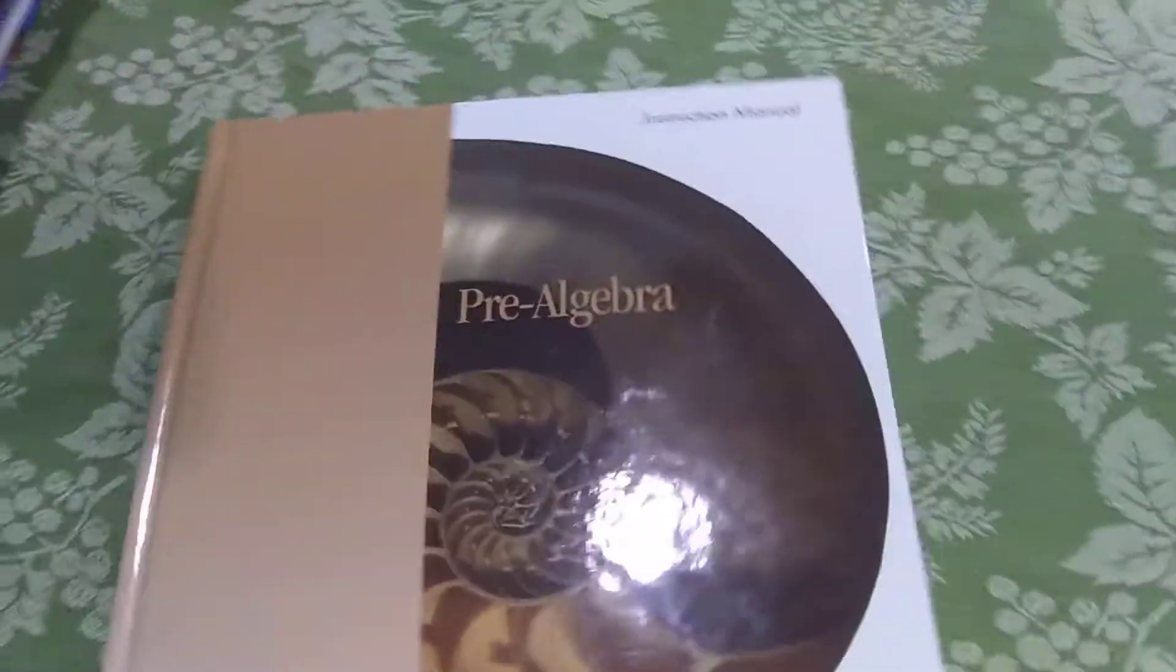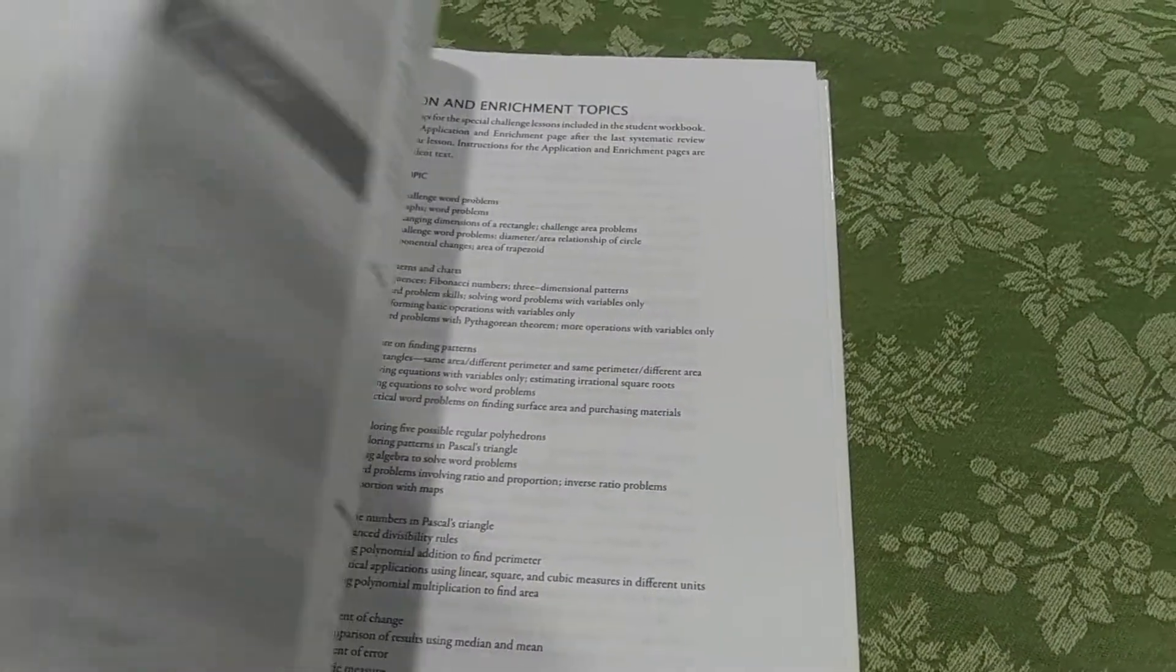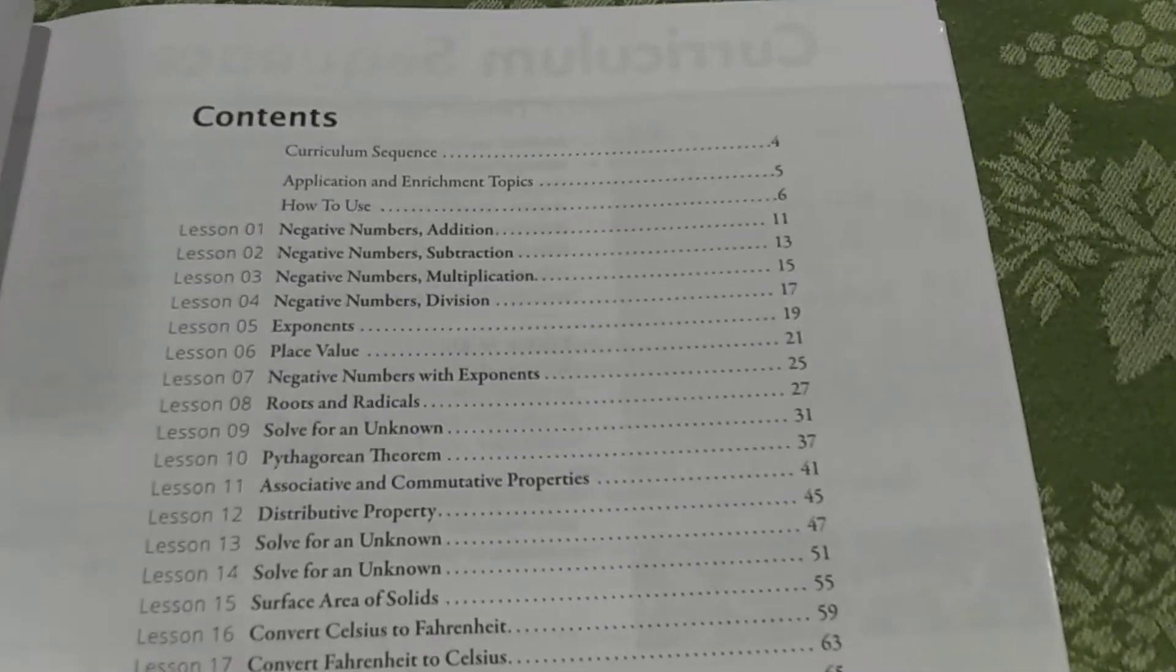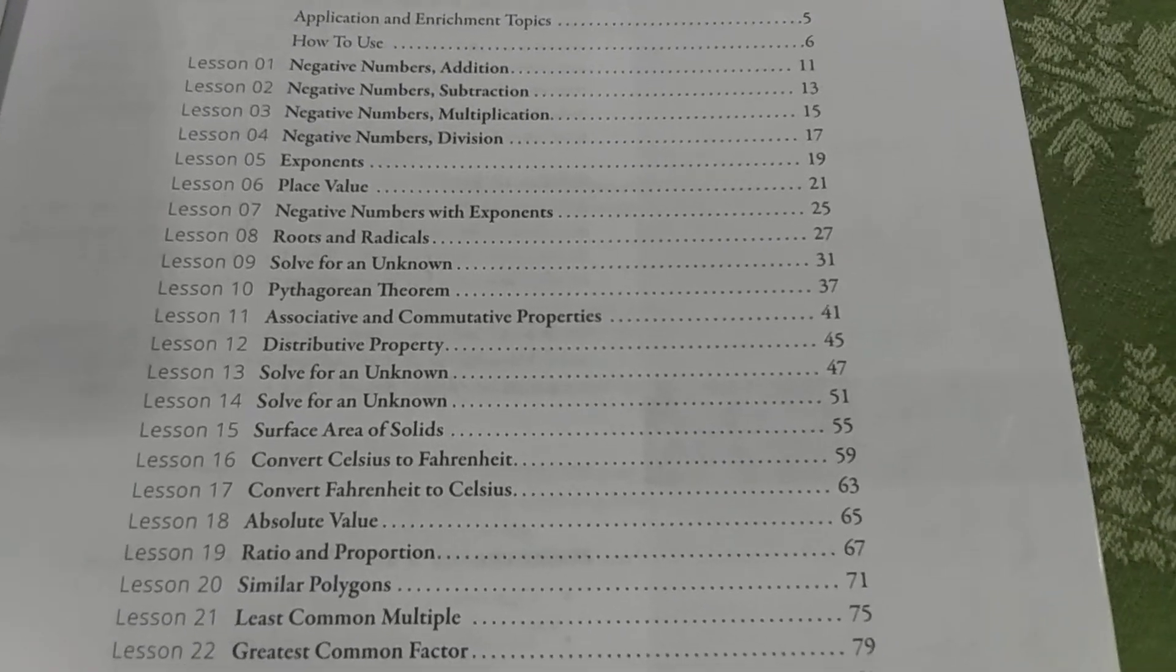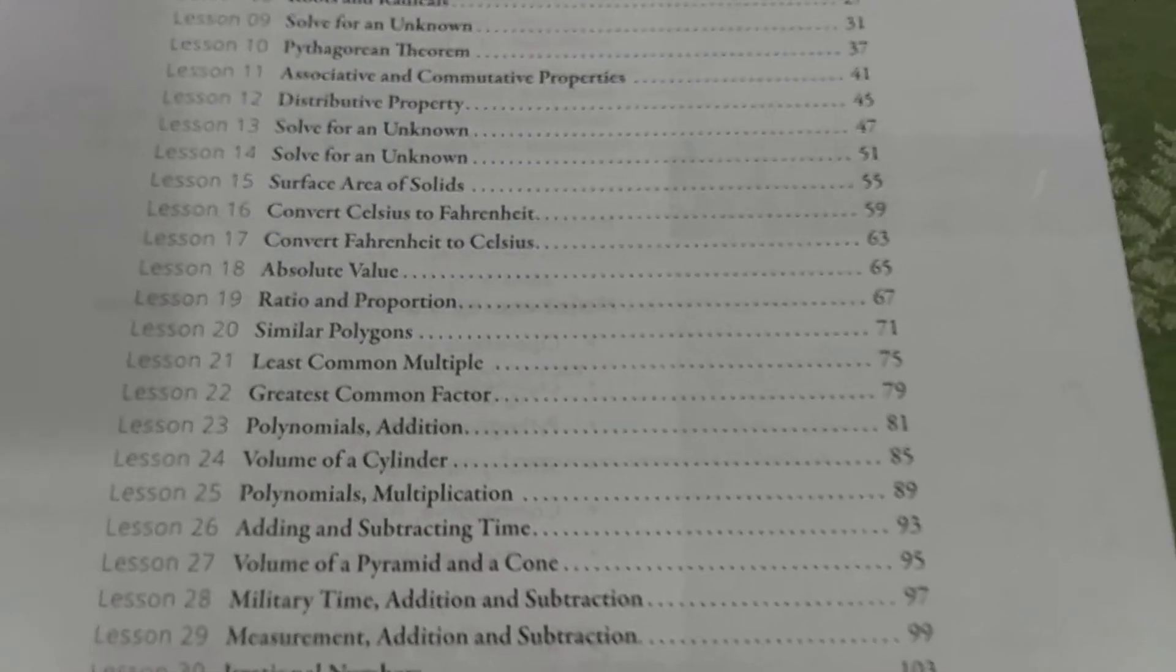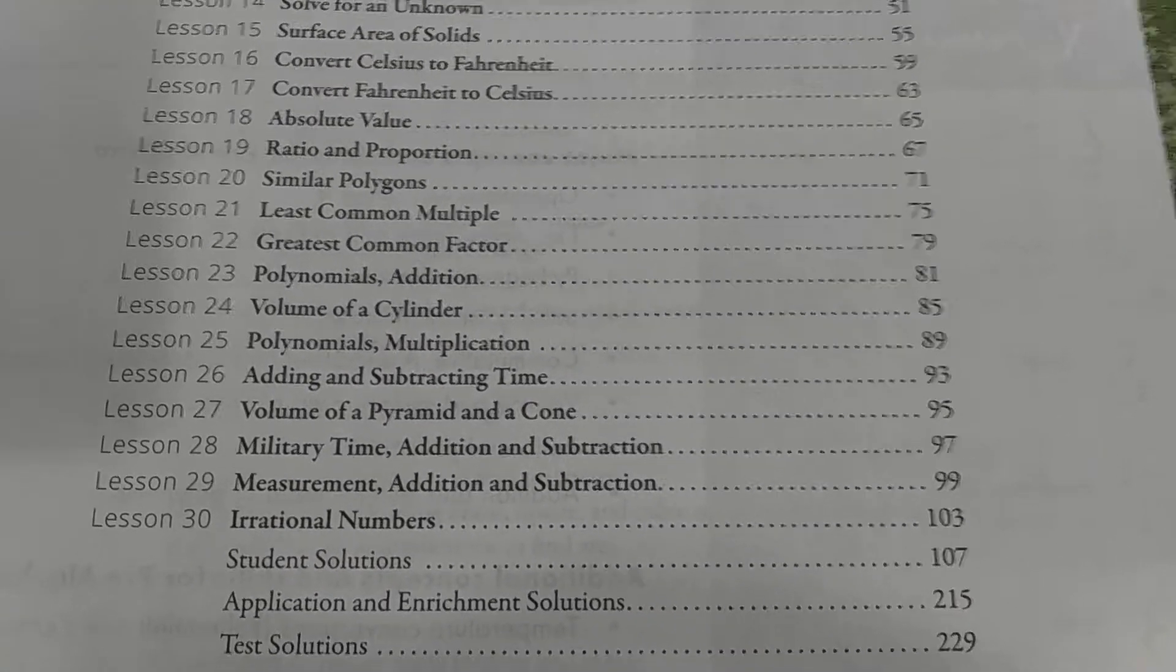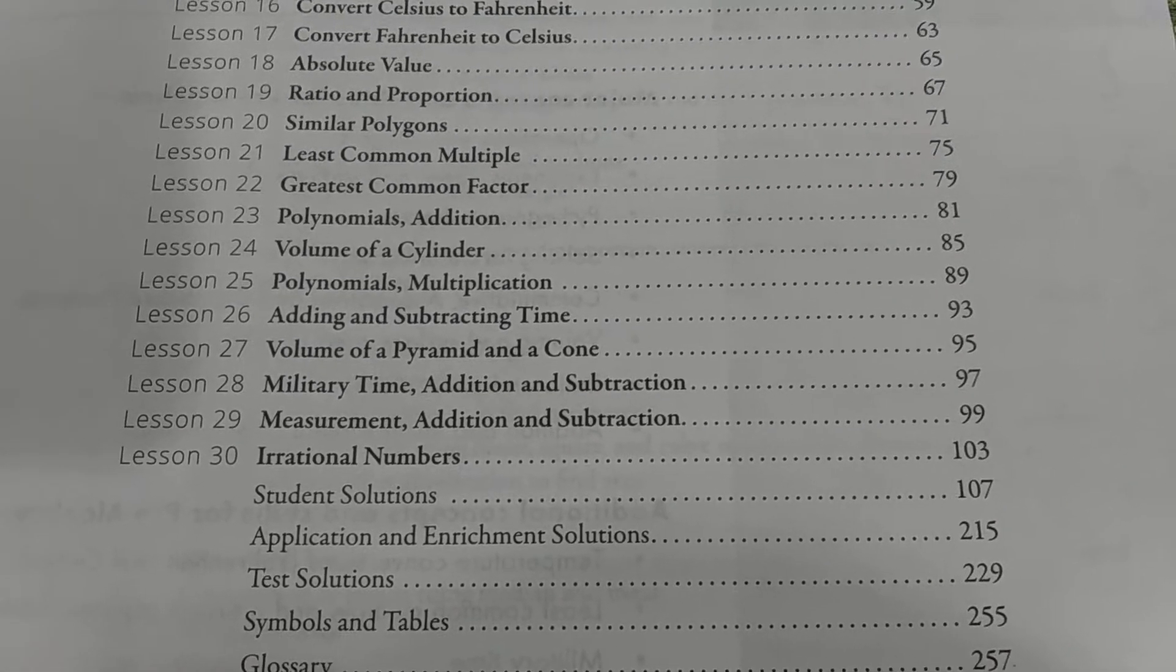Here's the last level that I have. Pre-Algebra. Negative numbers, exponents, place value, roots and radicals, solve for the unknown. Celsius and Fahrenheit, ratios, proportion, polygons, polynomials. Lots of good stuff in here.